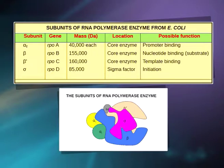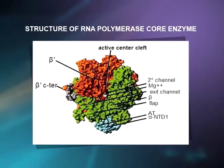The third largest subunit is the alpha subunit, present in 2 copies per RNA polymerase. Each alpha subunit contains two domains: alpha NTD (N-terminal domain) and alpha CTD (C-terminal domain). The alpha NTD contains the determinants for assembly of RNA polymerase, and alpha CTD contains factors for interaction with promoter DNA, making sequence-specific interactions at upstream element-containing promoters. It also contains determinants for interactions with regulatory factors.